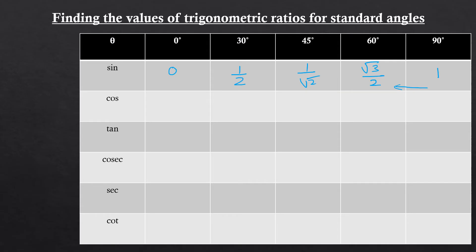For cosine, all you need to do is write the sine values in reverse order. So cos 0° takes the value that sin 90° had: 1, then √3/2, 1/√2, 1/2, and 0. We also know that tan θ = sin θ / cos θ.